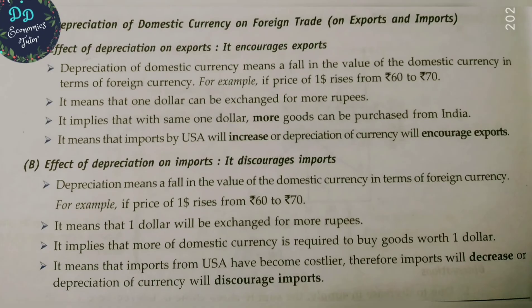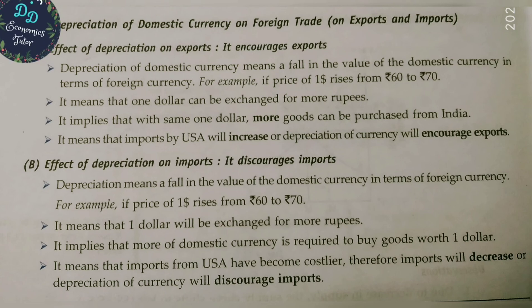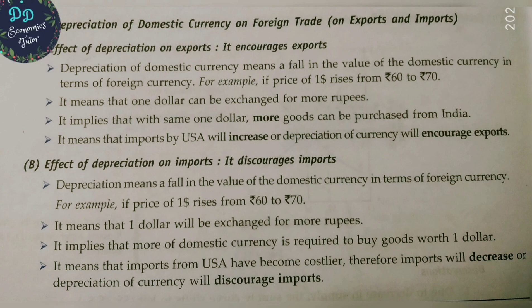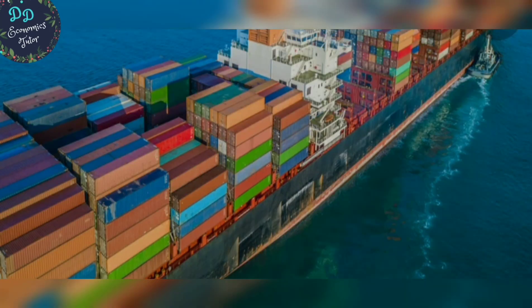Depreciation encourages exports but discourages imports. For example, if one dollar was 60 rupees and increases to 70 rupees, then more domestic currency is required to buy goods from abroad. So the cost of imports goes up, discouraging imports. Import costs become costly, and as a result, imports will decrease — depreciation of currency discourages imports.